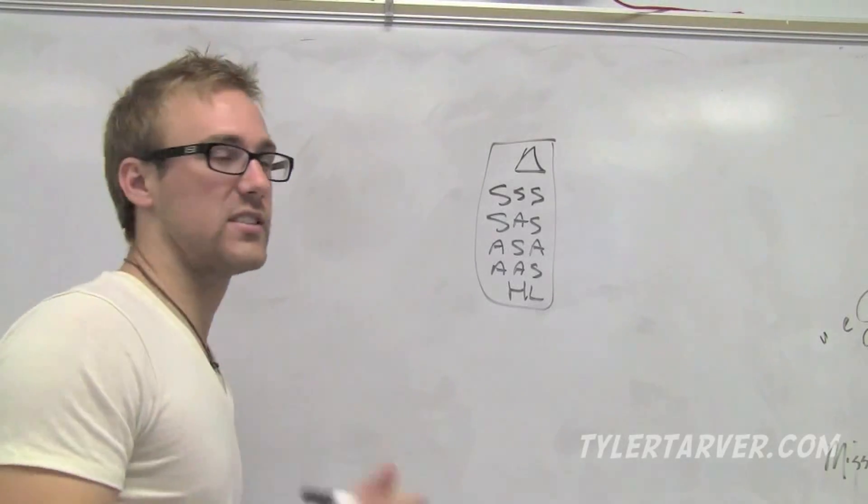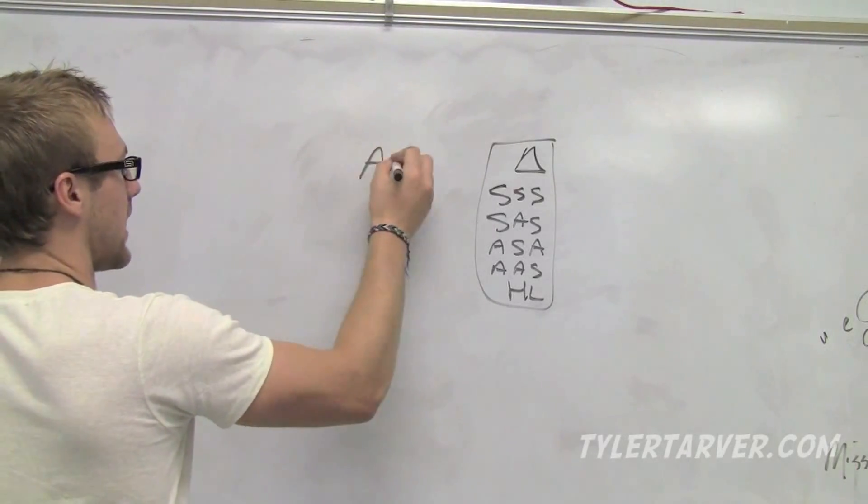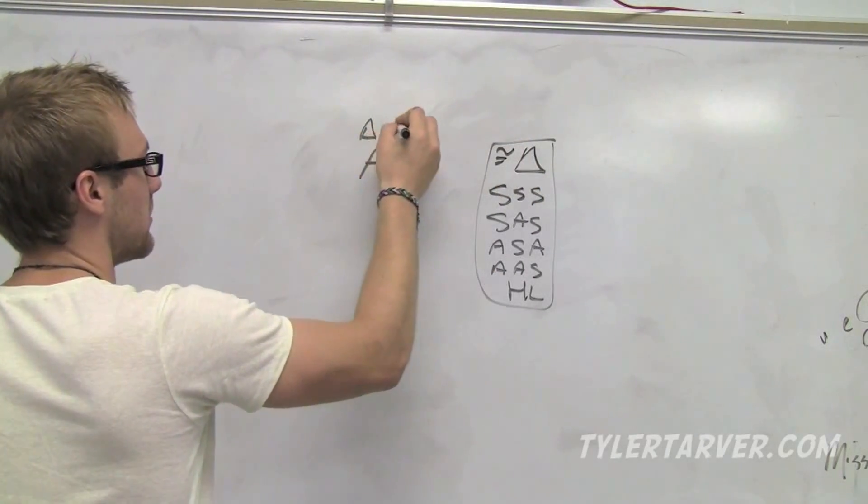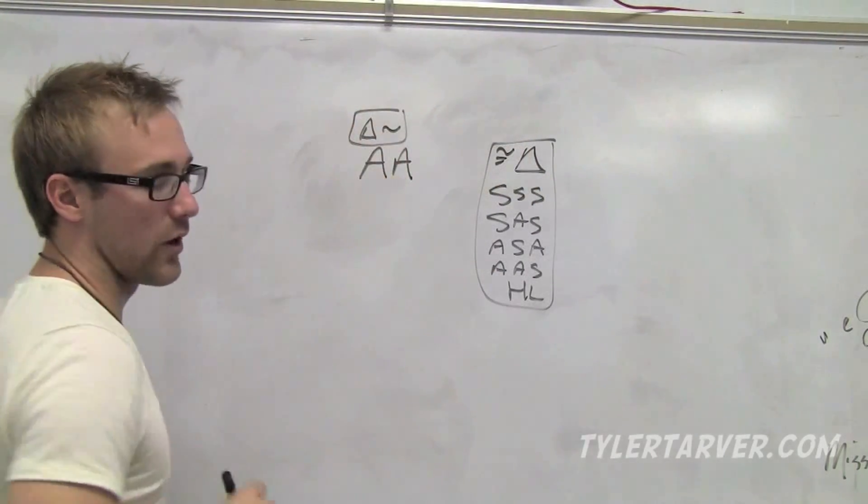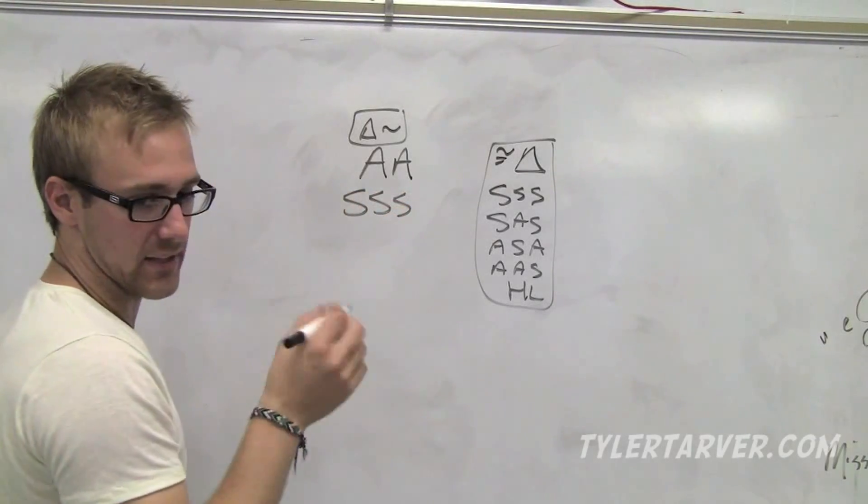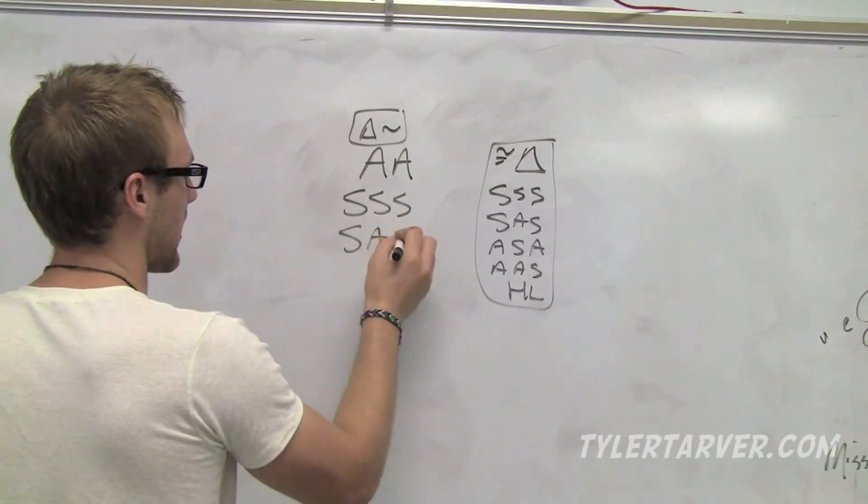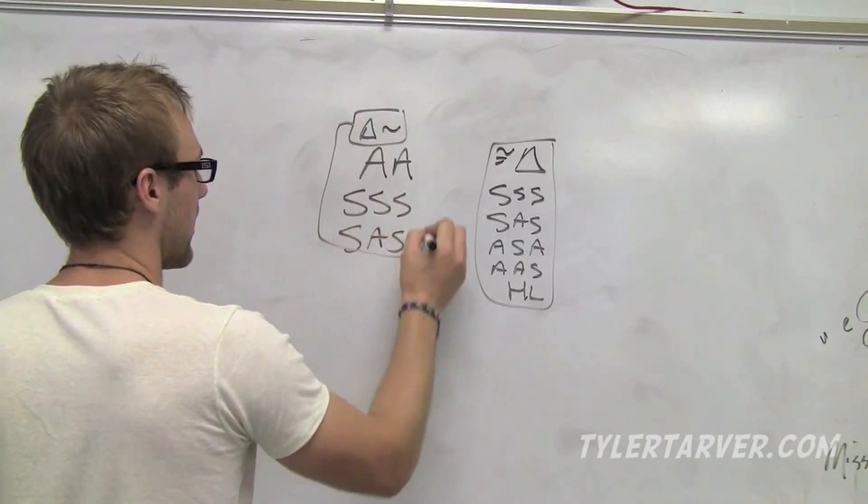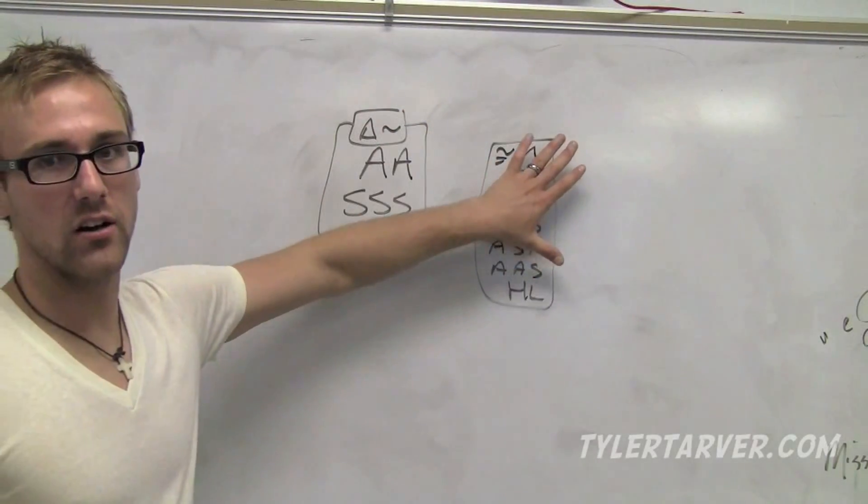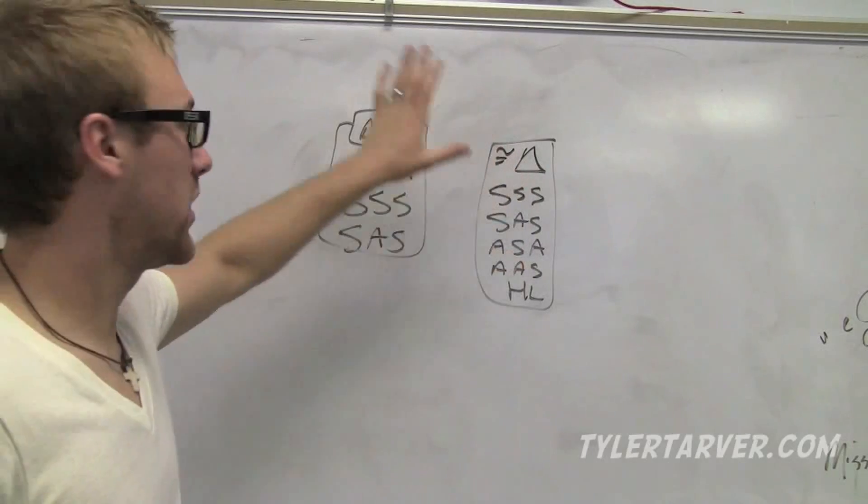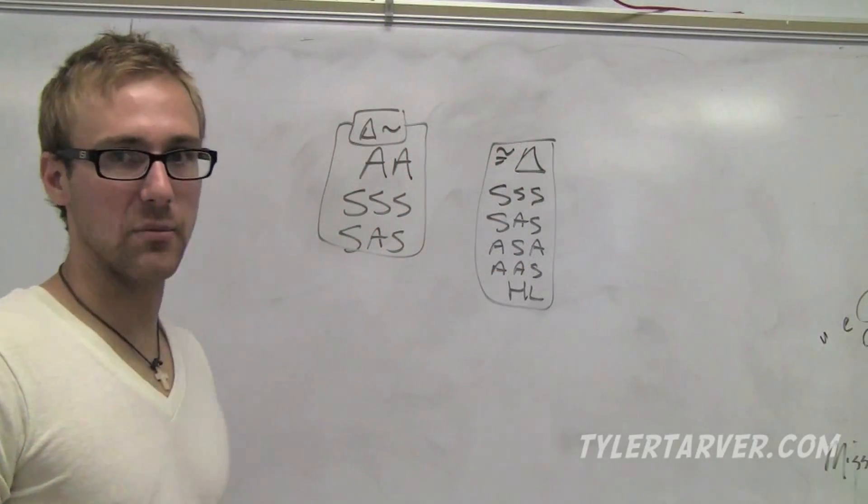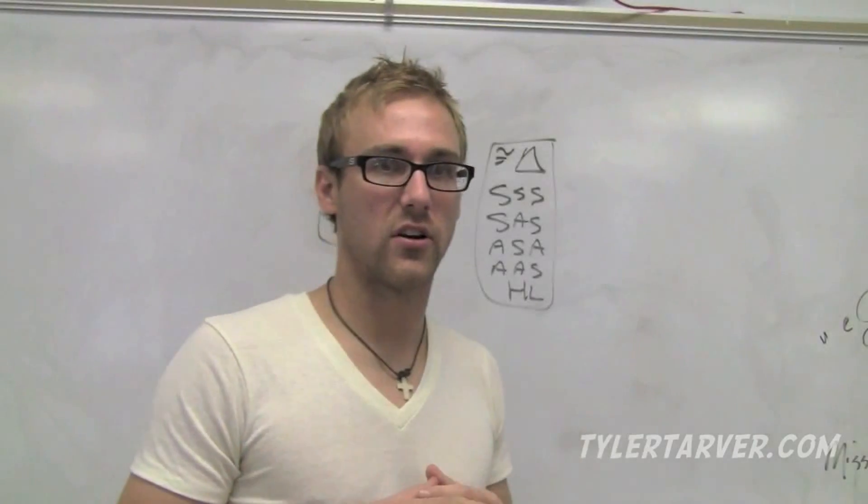Now for this section we're doing AA. This is triangle congruence. This is triangle similarity. We're doing AA, SSS, and SAS. That means we need to know all this junk to make them congruent. We need all this junk to make them similar. Similar means they're just smaller versions of each other.